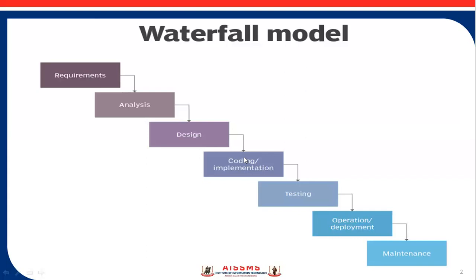The next is the coding phase or implementation phase. In this phase, developers — senior developers, junior developers, and the infrastructure team — are involved. We start building the software, writing the code for the product, and the work is divided into units. The actual coding starts in this coding phase and it is focused on the developer. Coding is one of the longest phases of the SDLC, and basically all developers are involved — front-end developers, back-end developers, and database developers, including Java developers.